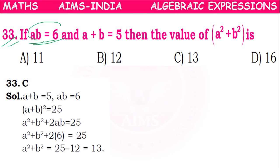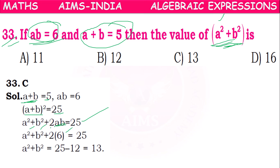Next: if ab = 6 and a + b = 5, then a² + b² how much? Squaring both sides: (a+b)² = 25, which expands to a² + b² + 2ab = 25. Substituting ab = 6: a² + b² + 12 = 25, so a² + b² = 25 - 12 = 13. 13 is the answer.